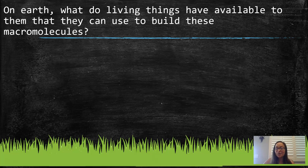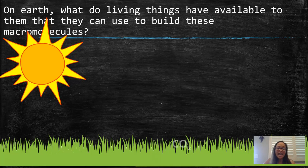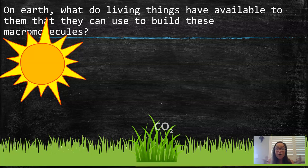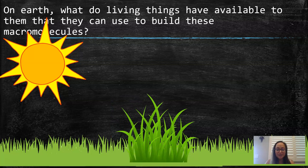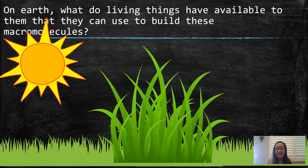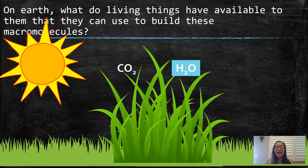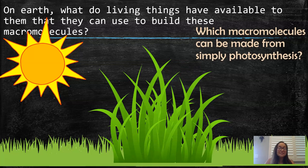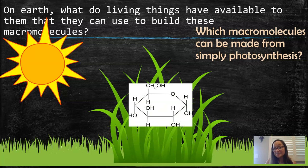One of the most amazing organisms on Earth are plants. Plants have to build all four organic molecules — carbohydrates, lipids, proteins, and nucleic acids. They don't eat; they have to build their own molecules from thin air. Plants take carbon dioxide from the air and water from the soil, and do photosynthesis. That's how sugars are built. With just carbon, hydrogen, and oxygen from photosynthesis, plants can build carbohydrates and lipids.